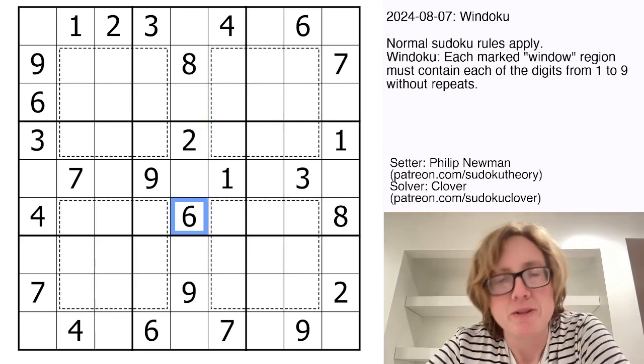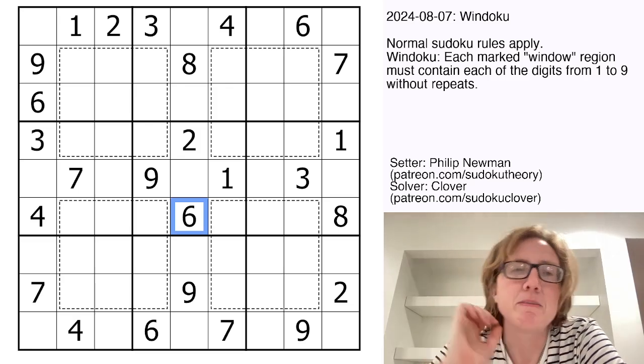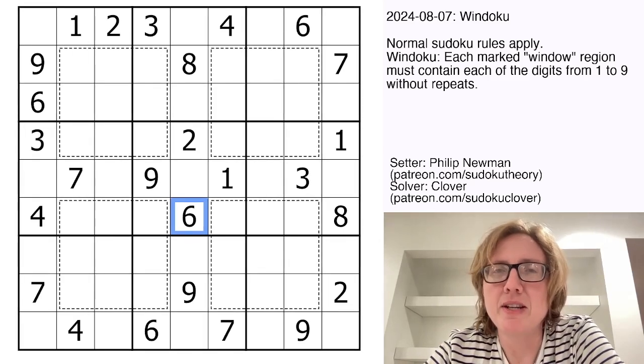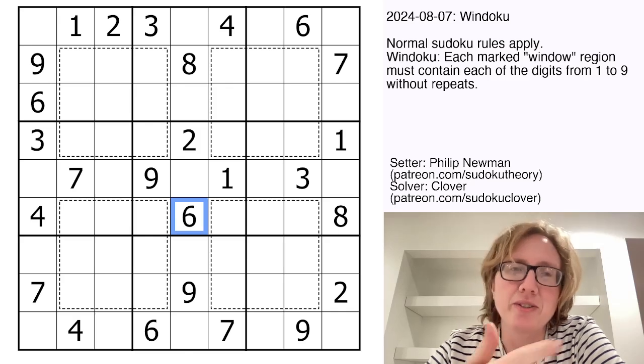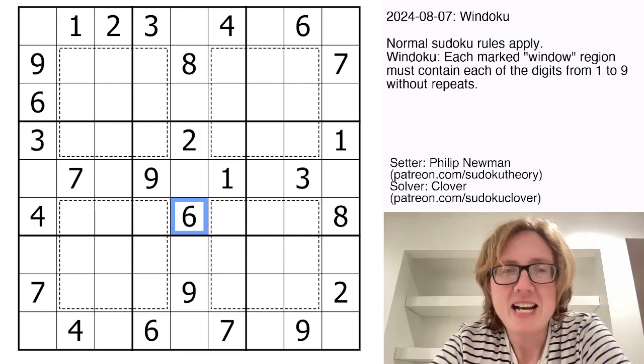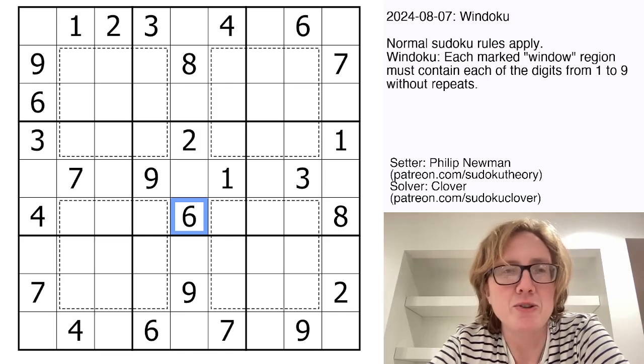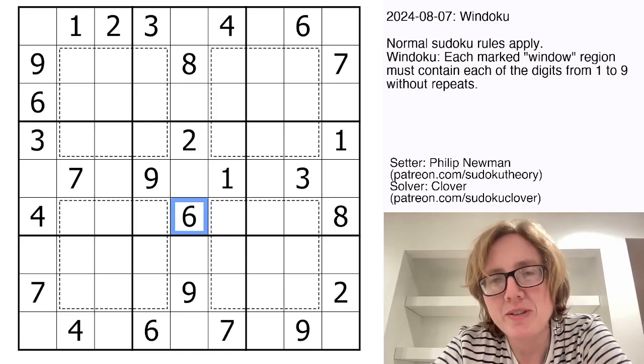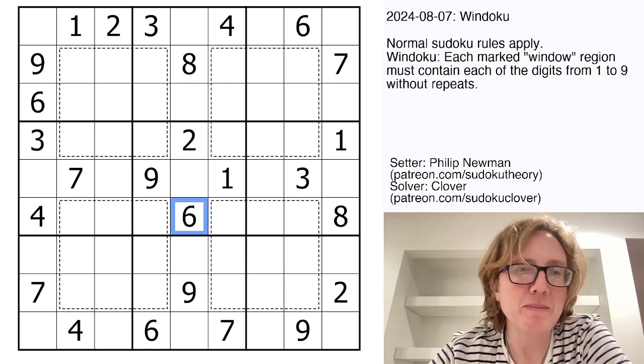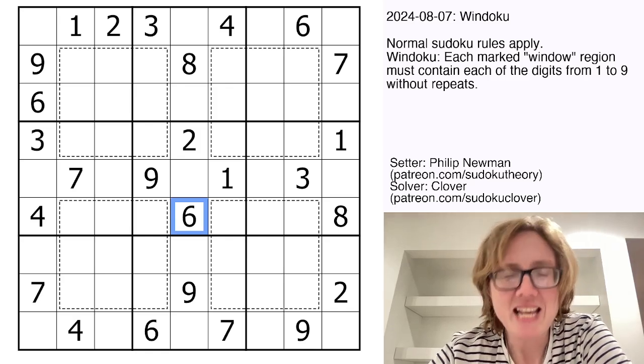But here's the thing about Windoku. There are two ways to solve this puzzle, and I have solved it both ways. In testing, it took me I think two minutes longer to solve it the normal standard way, just looking for what digit to place next. And then when I solved it a second time, not really remembering what the solve looked like but just trying to use this trick that I'm about to show you, I was about two minutes faster. And so if you want to learn to be more efficient solving puzzles like this one, this is the trick.